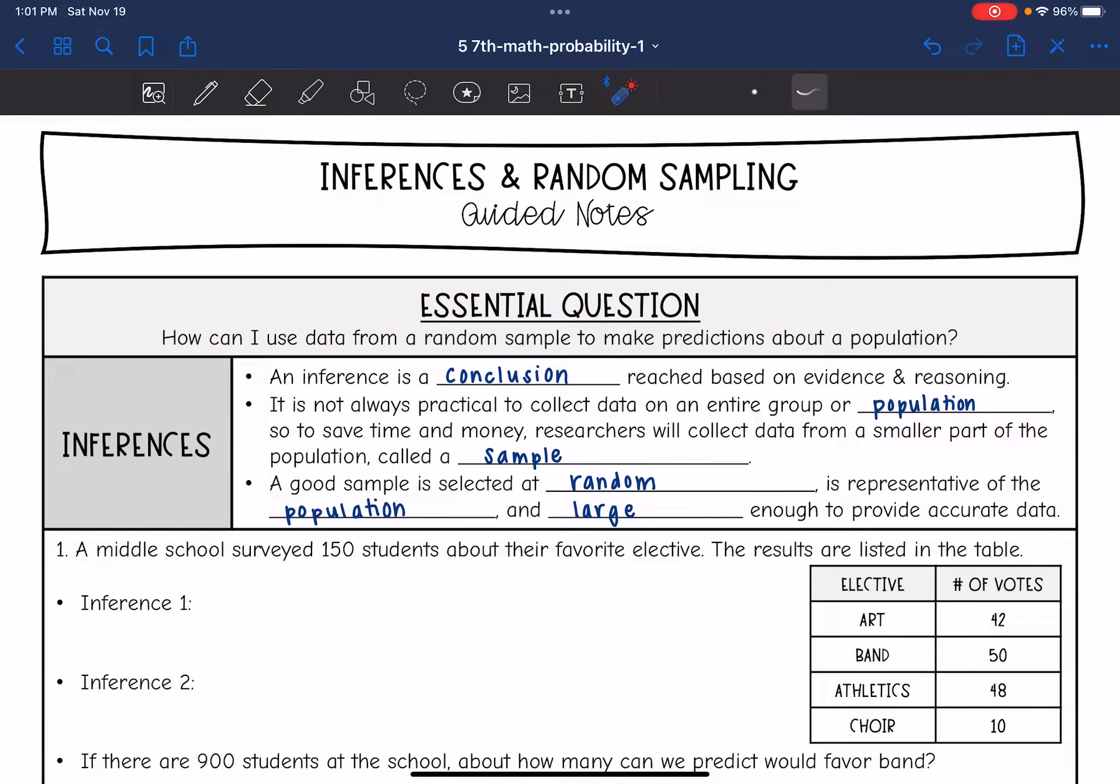So an inference is a conclusion reached based on evidence and reasoning. We are going to be making inferences or drawing conclusions based on some evidence and reasoning today. It is not always practical to collect data on an entire group or population, so to save time and money, researchers will collect data from a smaller part of the population called a sample. A good sample is selected at random, is representative of the population, and large enough to provide accurate data.